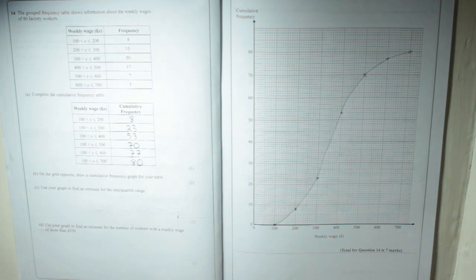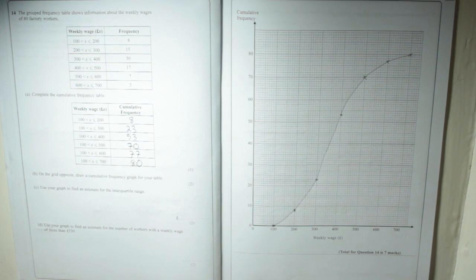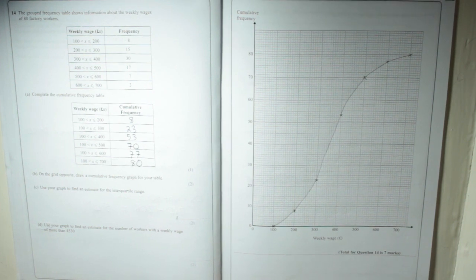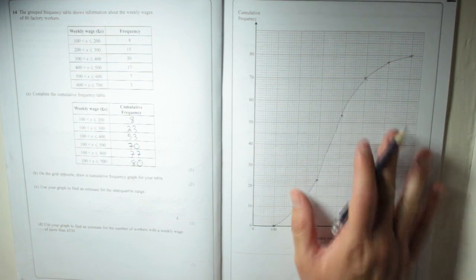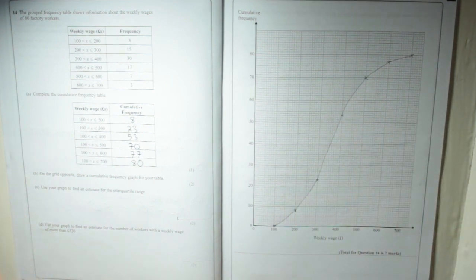Which means you won't get the exact number, but they'll give you a range of answers which are okay, which will mean you're correct. So, there's our cumulative frequency graph. That's part B, we've done that.